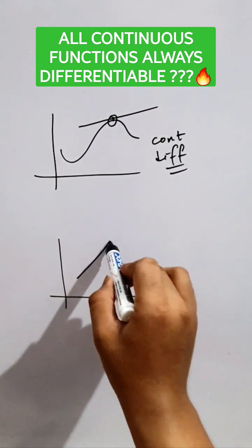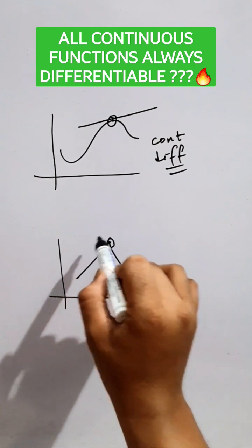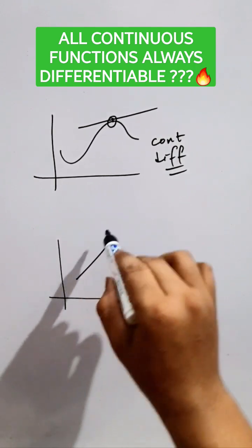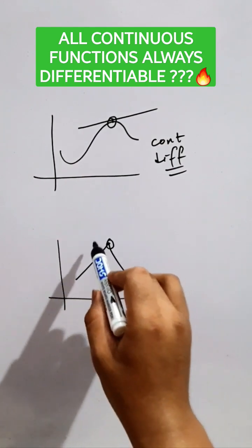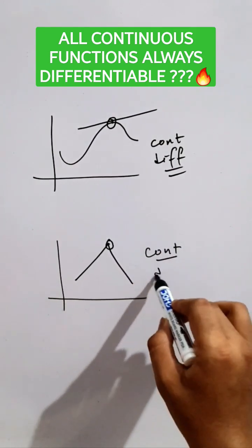Now here this is a point, this is also a continuous curve, but if we want to draw a tangent here we can't draw because it's a sharp edge and it's a straight line curve. So we can't draw tangent here, so this is a continuous graph but it's not differentiable.